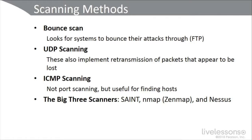In a nutshell, the big three scanners that are out there, and you can find them in almost every exploit kit, are Saint, Nmap (or the GUI version Zenmap), and Nessus. And don't forget, these can be scanners on wired or wireless networks.